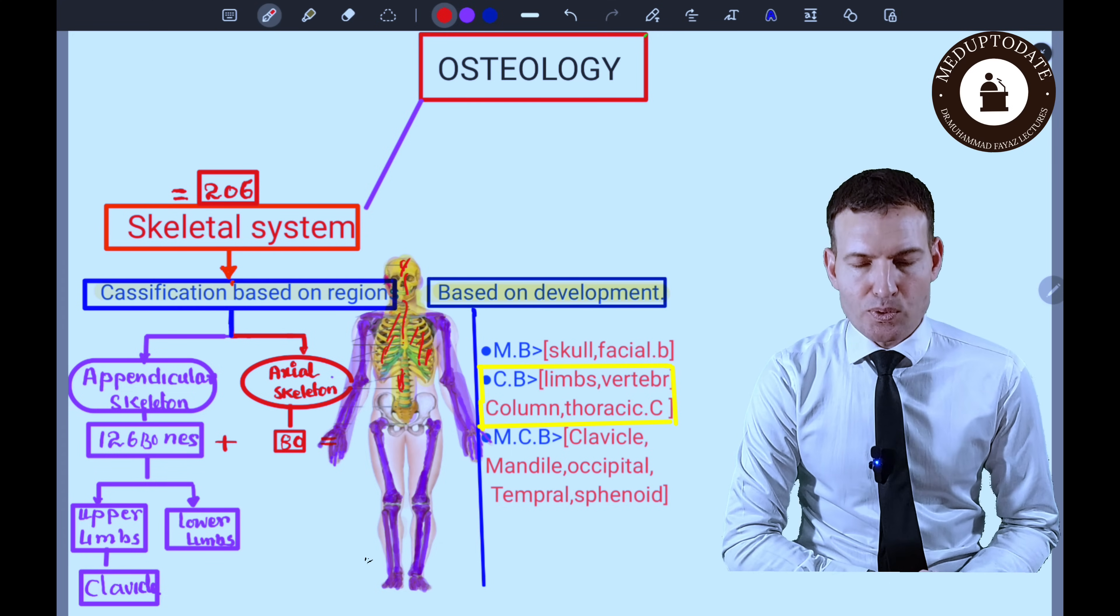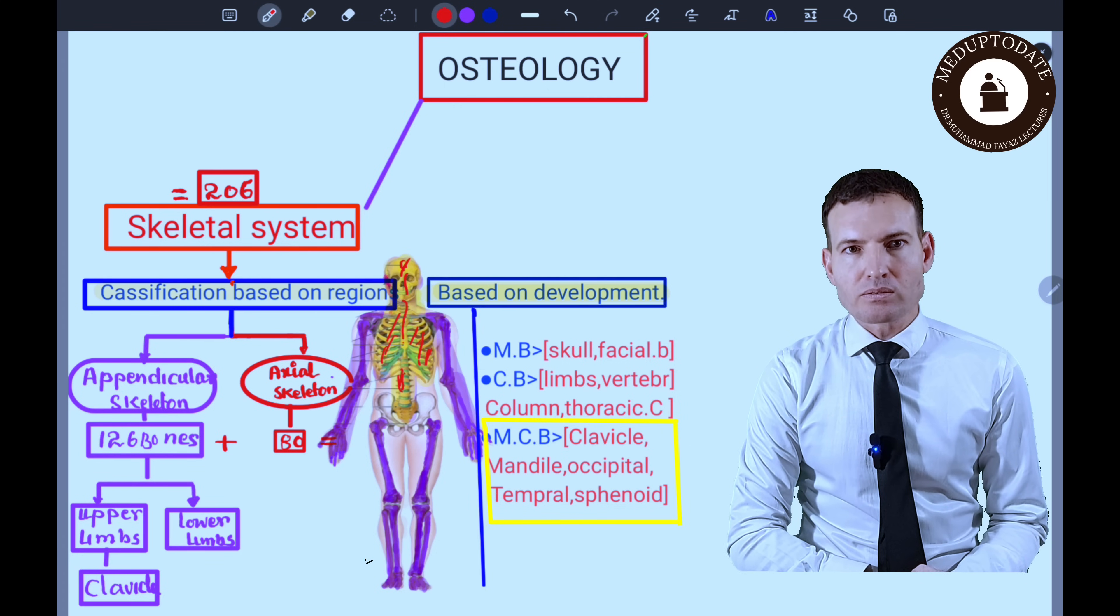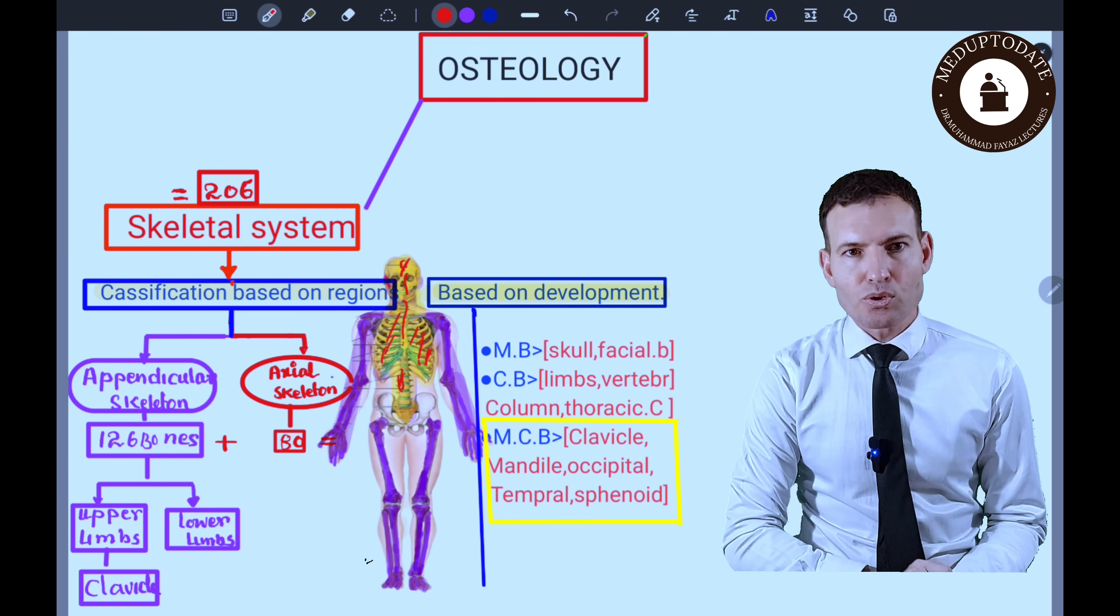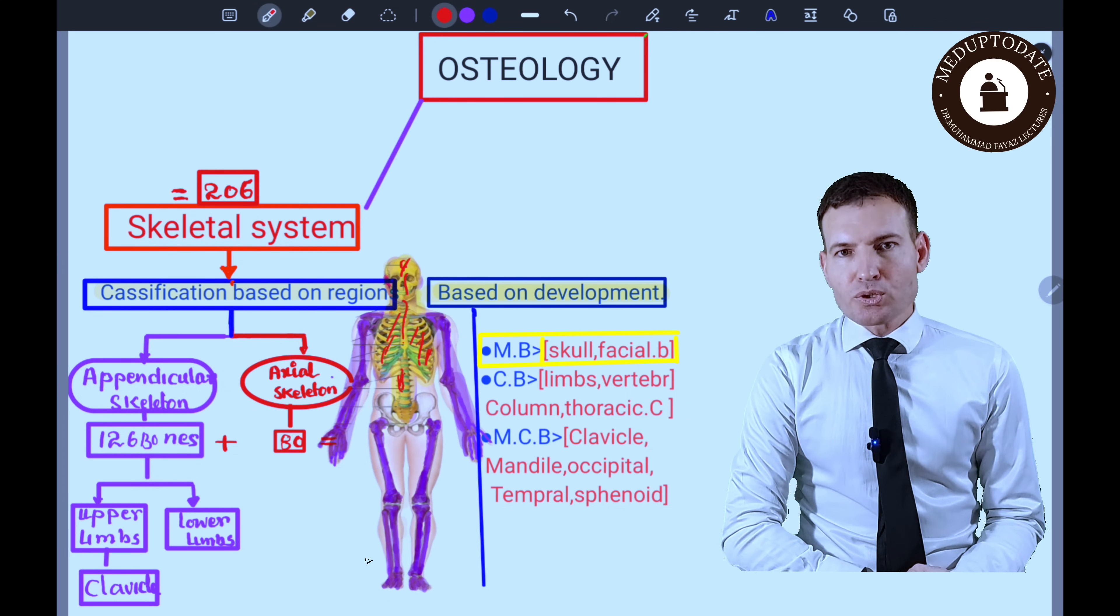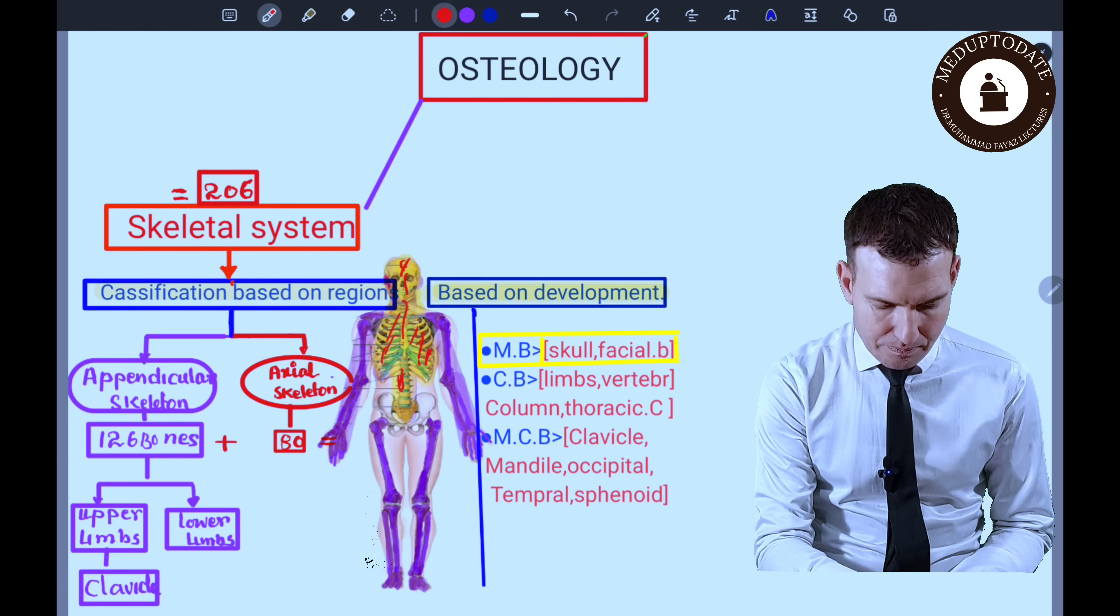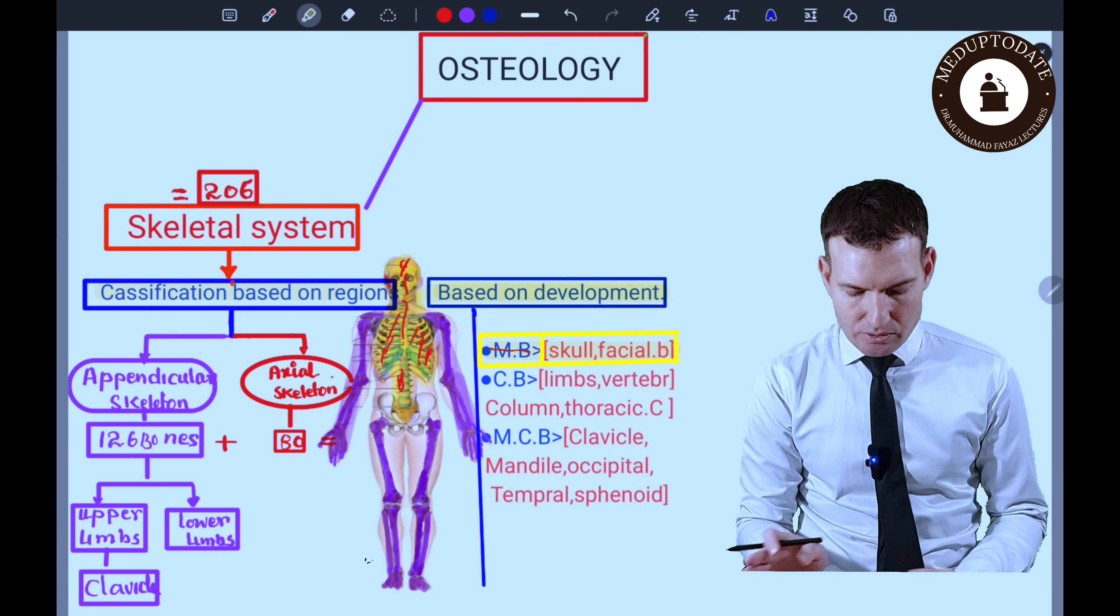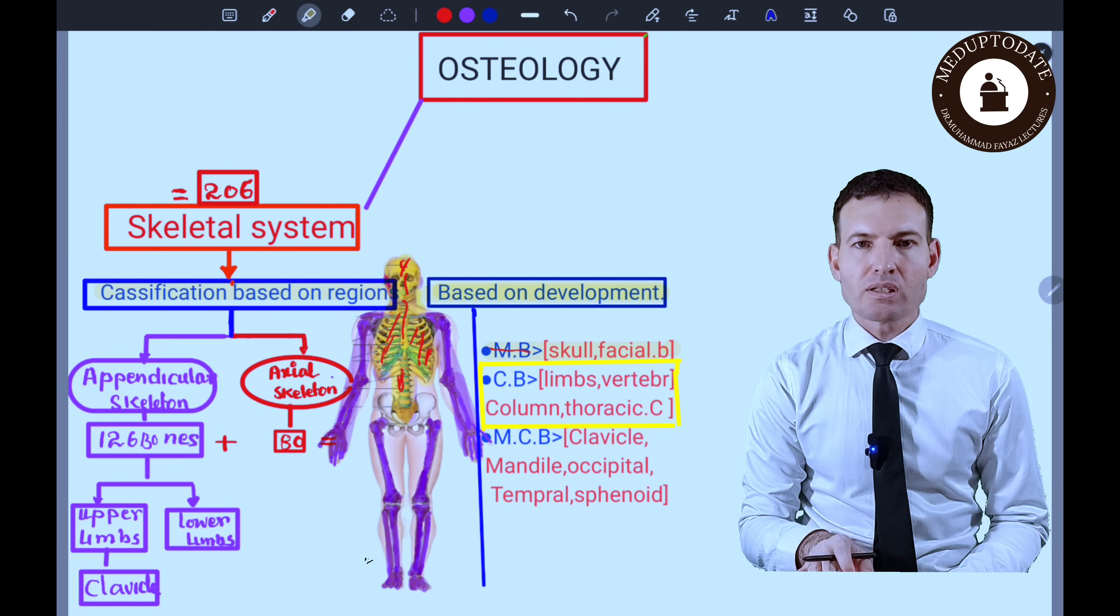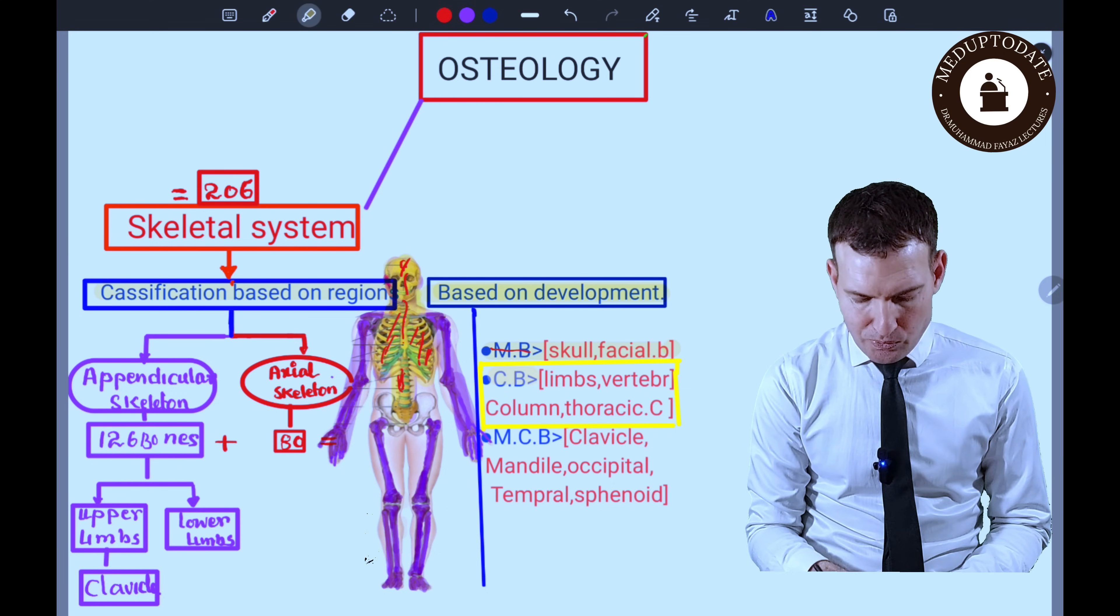They are known as cartilaginous bones. And some of the bones ossify mixed—first they start ossification in membrane then switch up to cartilage. One example of such bone is the clavicle. Membranous bones include some bones of the skull and facial bones. They ossify in membrane, but not all bones of the skull and facial bones—some of the bones of the skull and some facial bones.